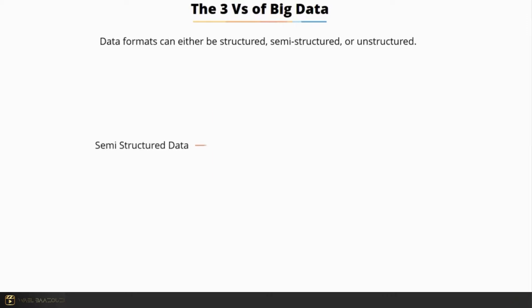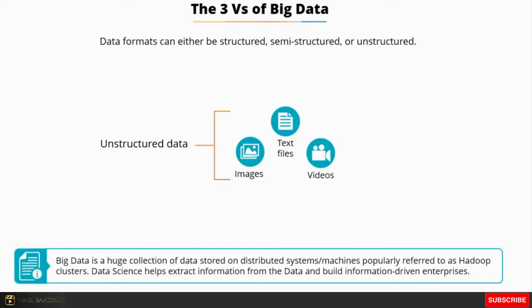Semi-structured data are usually in the form of files like XML, JSON documents and NoSQL database. Text files, images, videos or multimedia content are examples of unstructured data. In short, big data is a very large information database usually stored on distributed systems or machines popularly referred to as Hadoop clusters. But to be able to use this database we have to find a way to extract the right information and data patterns from it. That's where data science comes in - data science helps to build information-driven enterprises.